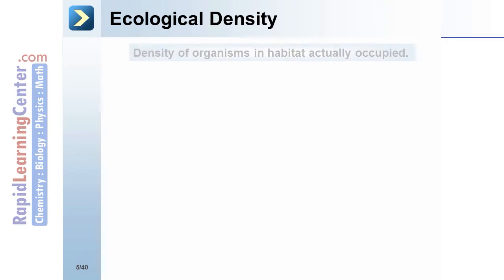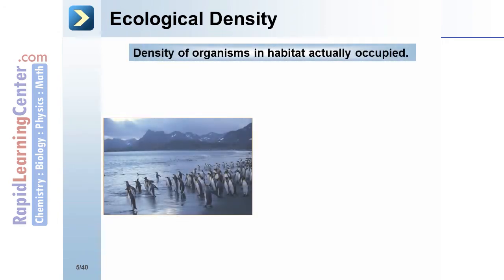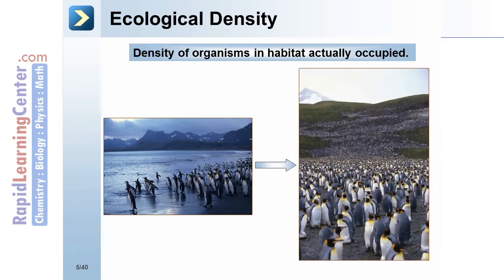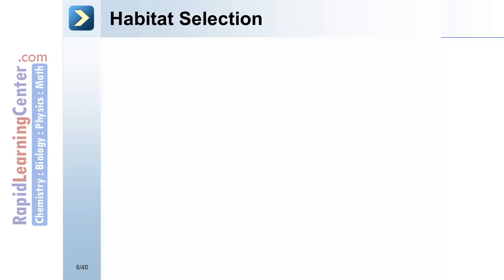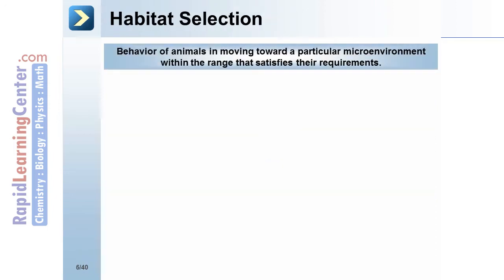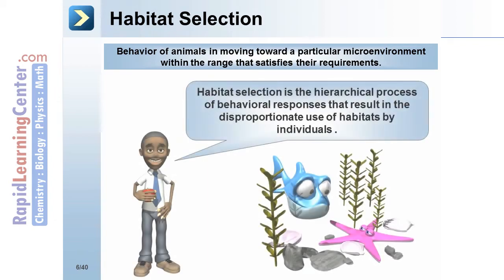Ecological density is the density of organisms in the habitat actually occupied. Habitat selection is the behavior of animals moving toward a particular micro-environment within their range that satisfies their requirements. It is a hierarchical process of behavioral responses that results in the disproportionate use of habitats by individuals.